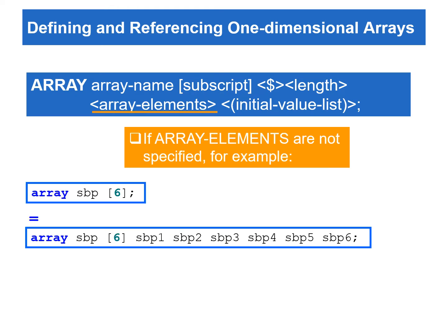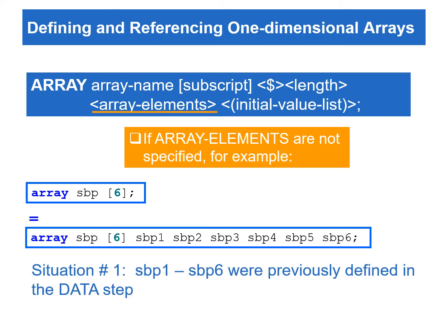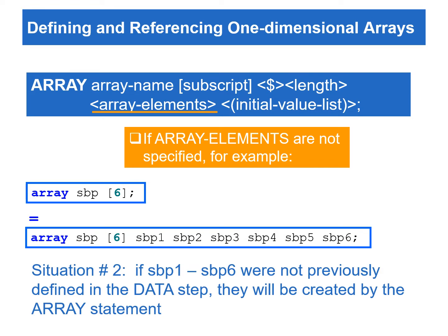If array elements are not specified, the array elements would be implied to the variables with names that contain the array name and the numbers 1 to n. For example, the first array statement is equivalent to the second one. There are a couple of situations for omitting array elements. The first is that SBP1 to SBP6 variables already exist in the data step. In the second situation, if SBP1 to SBP6 do not already exist, they will be created by using the array statement.